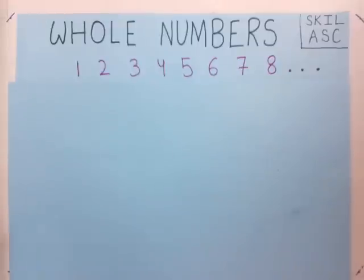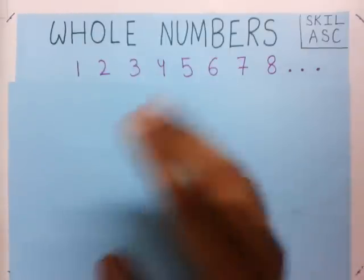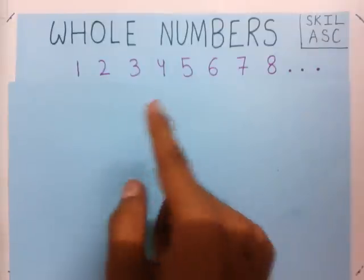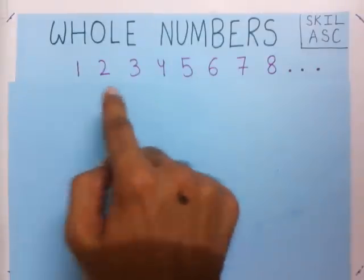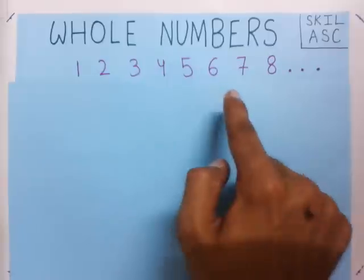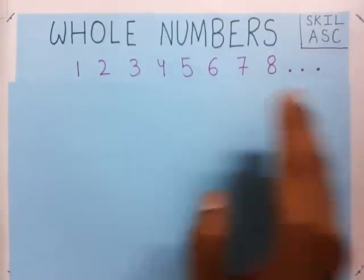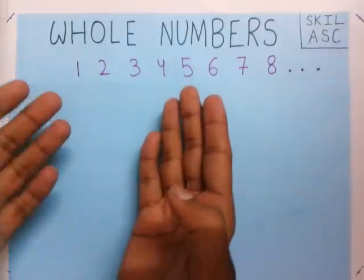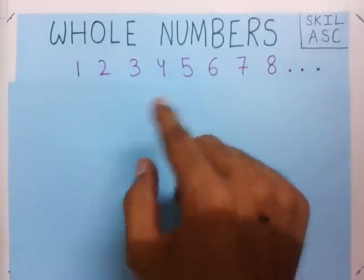Look around you. You will find so many things, and if you count them, you will need these numbers. This is a list of numbers which includes 1, 2, 3, 4, 5, 6, 7, 8, 9, 10, 11, 12, 13, and so on. These are the numbers which are used in our daily life while counting.